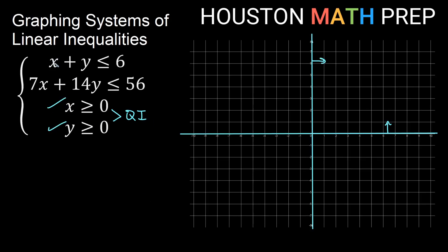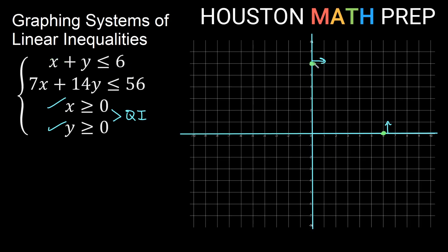For x plus y less than or equal to 6, finding the x-intercept: zero out y, and we get x equal to 6. For the y-intercept, zero out x, and we get y equal to 6. So both intercepts are 6. Let's go ahead and graph that line.